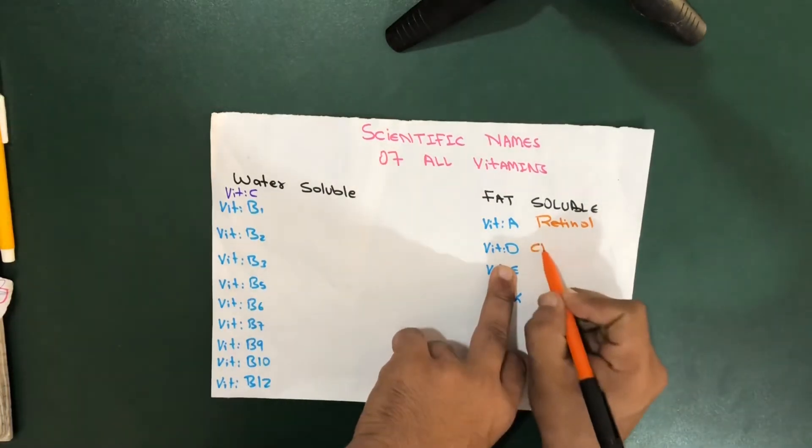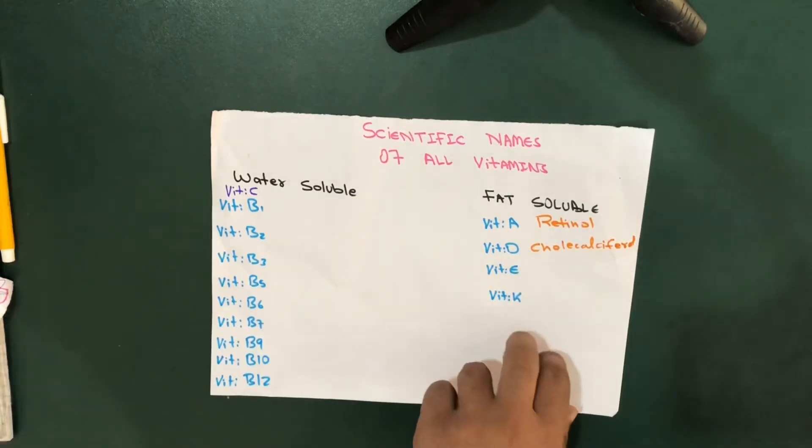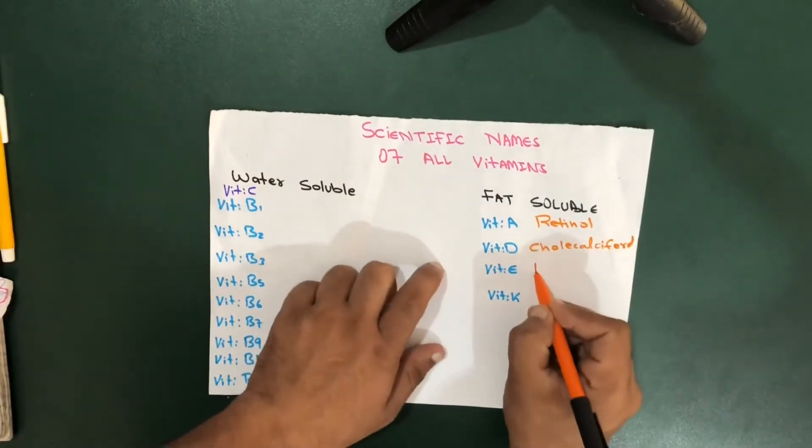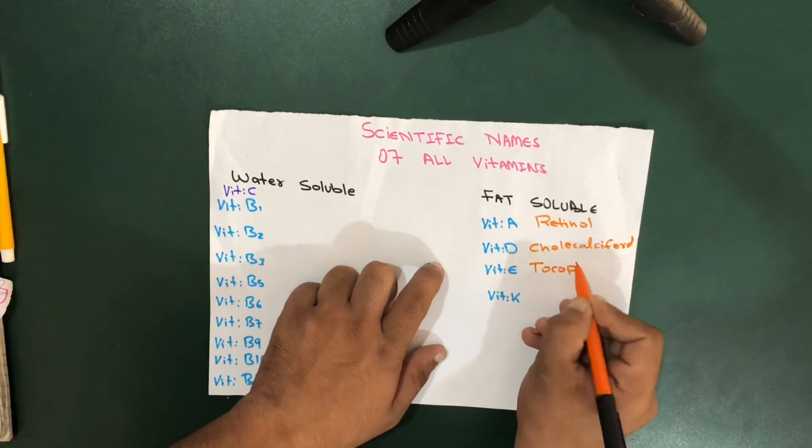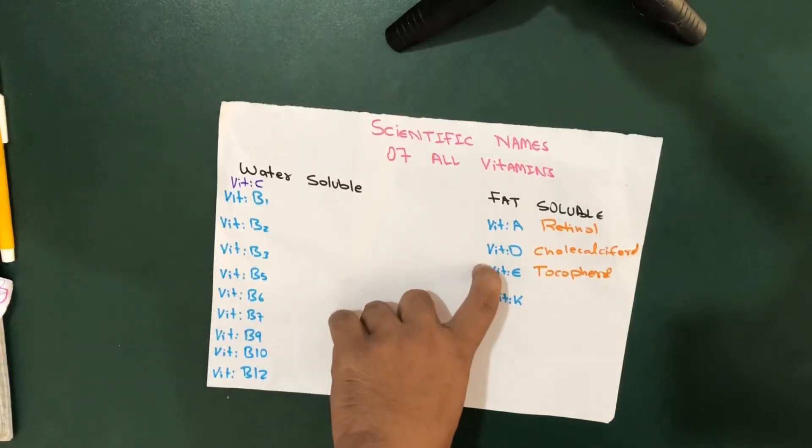Vitamin E is called tocopherol, and vitamin K is called manikin.